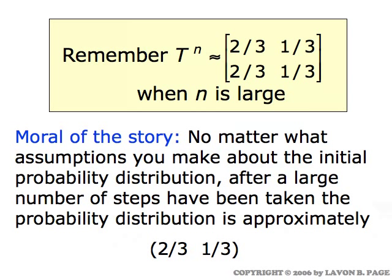No matter what probability distribution you take — the only requirement is A and B have to add up to one — multiplying that distribution times this matrix gives you two-thirds as the first entry and one-third as the second entry. This is the matrix that turns up when we look at what larger and larger powers of the transition matrix are getting close to. The moral of the story: no matter what assumptions you make about the initial probability distribution, after a large number of steps the probability distribution is approximately two-thirds and one-third.